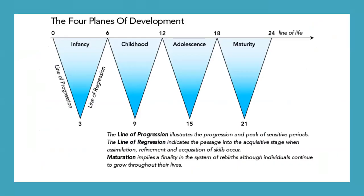Let's take a look at the graph showing the planes of development. Each plane spans approximately six years. The horizontal line is the line of life and the oblique lines that form the triangles are the lines of progression and regression. The first phase of each cycle opens up to particular experiences and related learning. The second half consolidates these achievements in preparation for the next cycle. For example, the opening phase of infancy is from birth to three, and the closing phase is from three to six — so a four-year-old is in the closing phase of infancy.